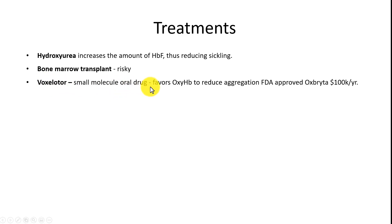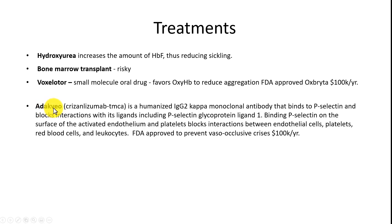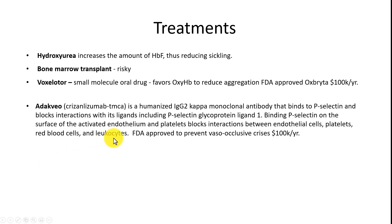Voxelotor is a new small-molecule oral drug that favors oxyhemoglobin to reduce aggregation. It's FDA approved, called Oxybrita, and costs about $100,000 per year. Another drug is Dacvio, a humanized IgG2 kappa monoclonal antibody that binds to P-selectin and blocks interactions with its ligands, including P-selectin glycoprotein-like ligand 1. It blocks interactions between endothelial cells, platelets, red blood cells, and leukocytes — making them less sticky. It must be injected and has also been FDA approved to prevent vaso-occlusive crisis, also at about $100,000 per year.